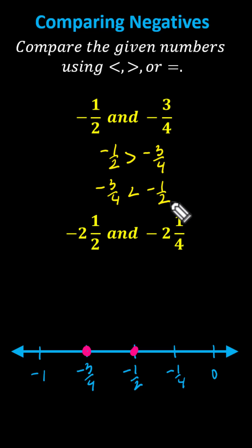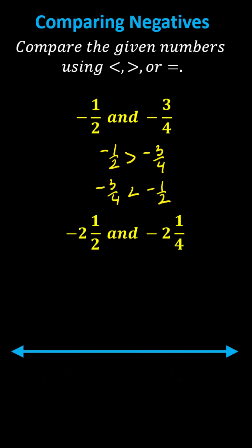Next, we have negative two-and-a-half and negative two-and-one-fourth. Again, let's plot these on the number line. Both values are between negative two and negative three. Negative two is greater than negative three, indicating negative two is on the right and negative three is on the left. Again, let's break the interval from negative two to negative three into four equally-sized parts.